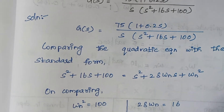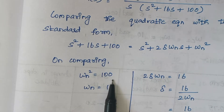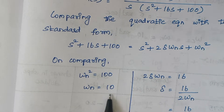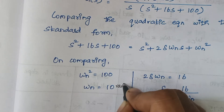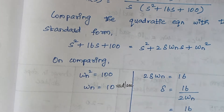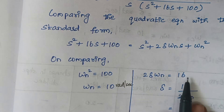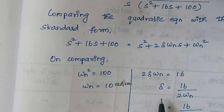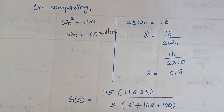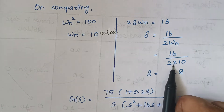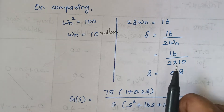Since ωₙ² = 100, therefore ωₙ = 10 radians per second. And since 2ζωₙ = 16, substituting the value of ωₙ, we get ζ = 0.8. So this is the corner frequency for the given quadratic expression.